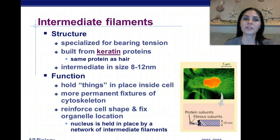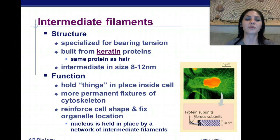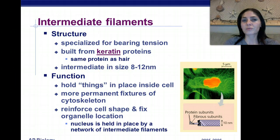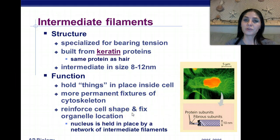The last type of filament we're going to talk about are intermediate filaments. They are specialized for bearing the tension in the cell, and they are built from keratin proteins — the same protein that your hair and fingernails and toenails are composed of. They are intermediate in size, ranging from 8 to 12 nanometers in diameter. They basically hold things in place inside of the cell, and they're the more permanent fixtures of the cytoskeleton, kind of like the steel frames and wooden frames of houses and buildings. They reinforce the cell shape, fix the organelle location, and the nucleus is actually one of the organelles held in place by a network of intermediate filaments.